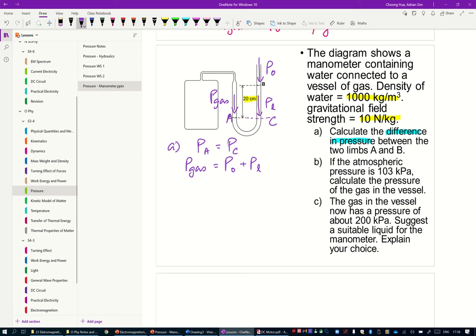The difference in pressure between two limbs A and B, between A and B. So the difference is actually here. The difference is actually here. So what we are going to take is P gas minus P0 equals liquid pressure. So the liquid pressure is the one that you are interested in.